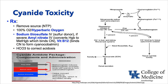Thiocyanate can build up in patients with renal failure and cause toxicity in and of itself. Assuming normal renal function, providing thiosulfate as a sulfur donor allows the body to produce thiocyanate and excrete it in the kidney. Also, amyl nitrate can be used to convert hemoglobin to methemoglobin by oxidizing Fe2+ to Fe3+. Methemoglobin can bind cyanide and form cyanomethemoglobin. Using a small portion of our large hemoglobin supply to bind the free cyanide ion is helpful. In severe acidosis, bicarbonate can also be given.